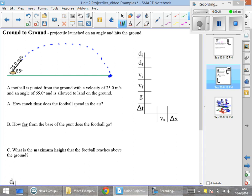It's being punted with a velocity of 25 meters per second at an angle of 65 degrees. We want to know how much time it takes to hit the ground, how far the range of the football is, and what maximum height the football reaches.